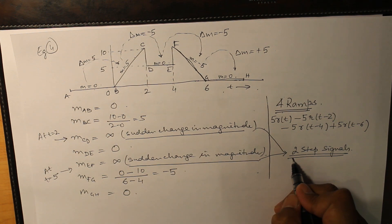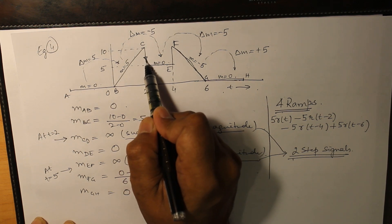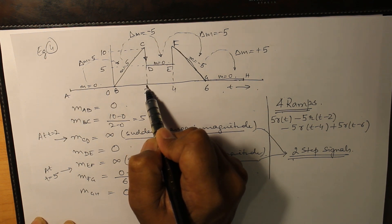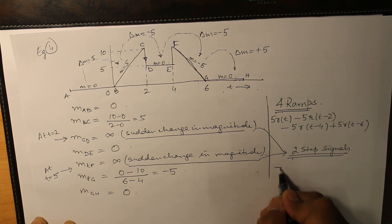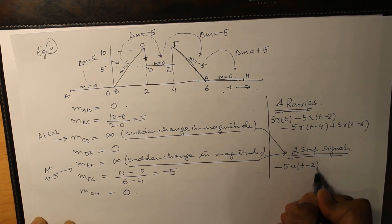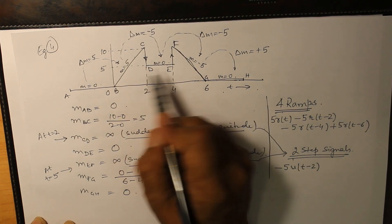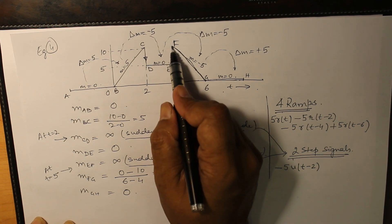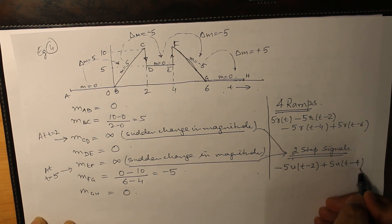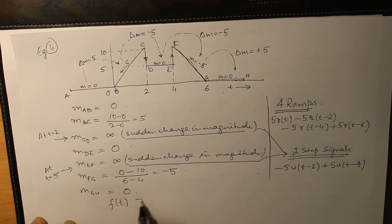The two step signals: the change in magnitude from 10 to 5 means a change of minus 5, so the first step signal at t equals 2 is minus 5u(t minus 2). The next change at t equals 4 is rising from 5 to 10, a net change of plus 5 units, so we have plus 5u(t minus 4). When we add these 4 ramps and 2 step signals, we obtain the answer f(t) for this waveform.